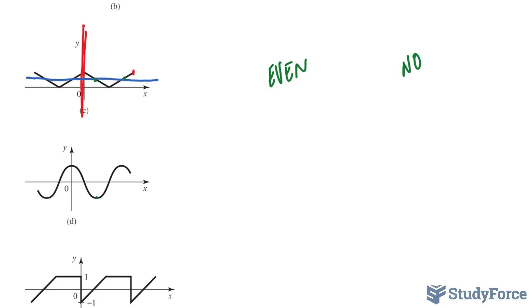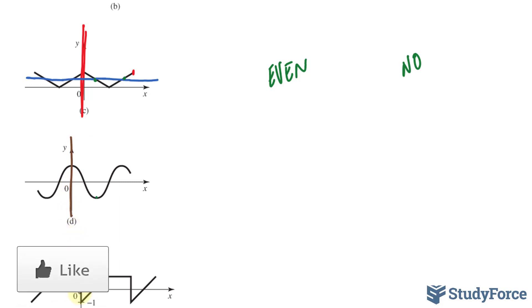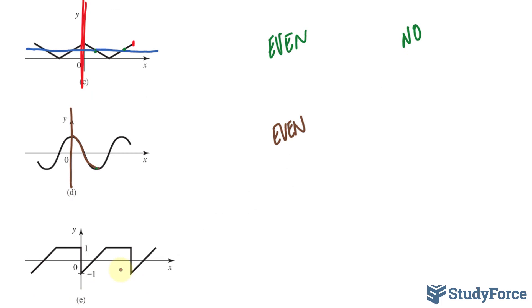In question d, the waveform appears to be a cosine wave. Splitting it down the middle and reflecting about the y-axis confirms it's an even function. To test for half-wave symmetry, a point on the negative portion half a cycle away will have the same magnitude but opposite sign in y-coordinate. So this is a half-wave symmetry.